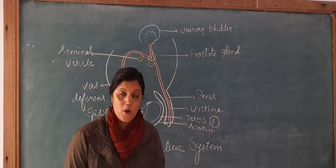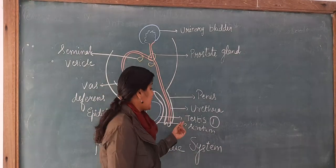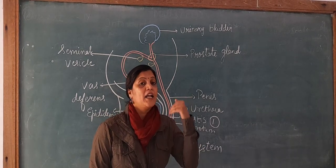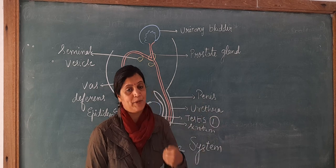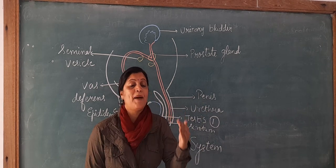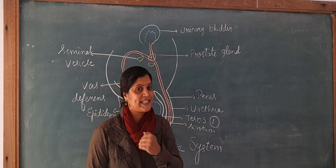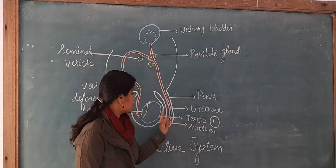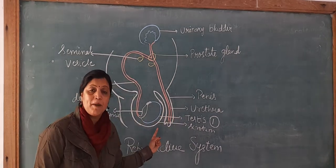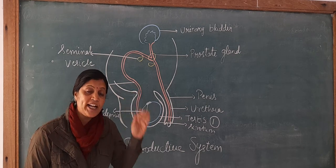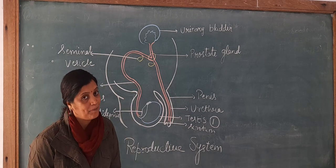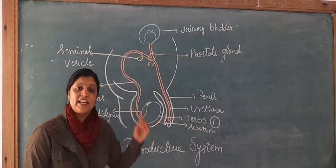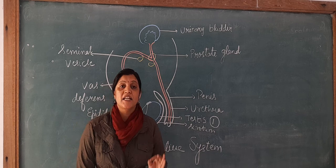The testis also releases sperms, but to release sperms it requires an optimum temperature — less than our body temperature, specifically about 3 degrees Celsius less than our body temperature. This temperature is provided by the scrotum, which allows the testis to release sperms.